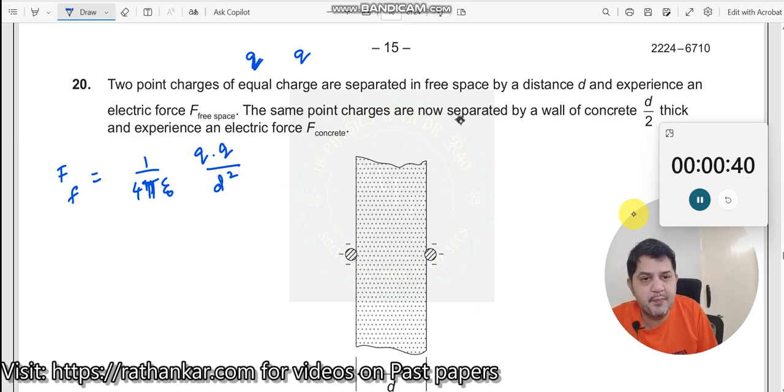Now the same point charges are separated by a wall of concrete d by 2. So this distance is d by 2 over here, and then experience an electric force F concrete.